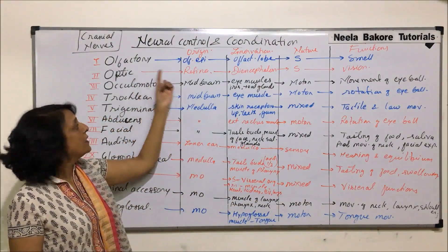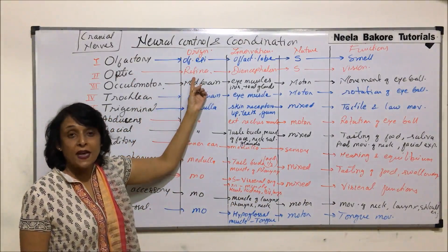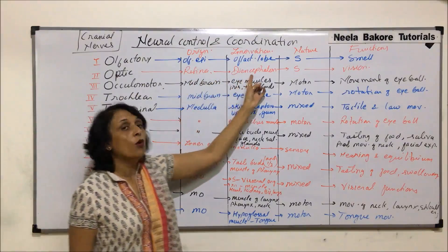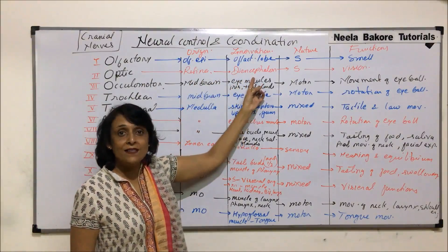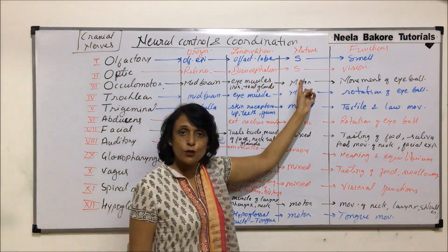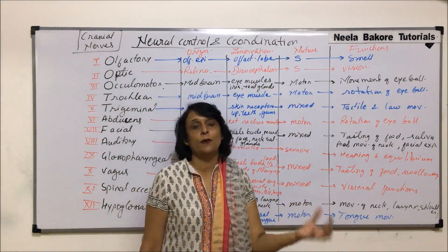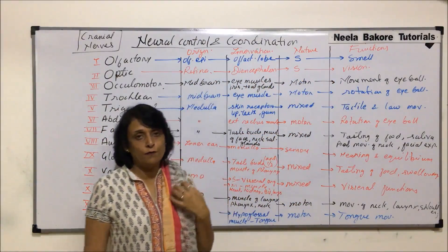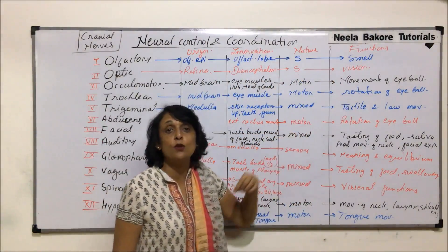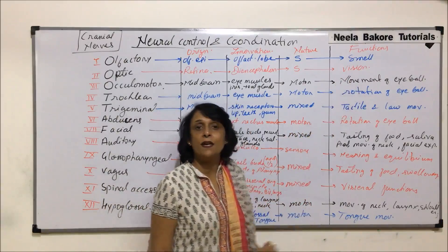Optic nerve — as the name tells us, it arises from the retina of the eye and goes to the diencephalon. It is also a sensory nerve, perceiving all visual stimuli, so it helps us in vision.